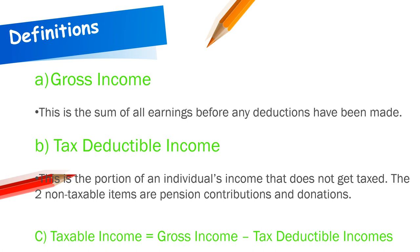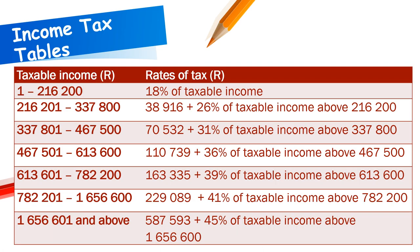The income tax table is given in annual incomes. If you are only given a monthly taxable income, multiply it by 12 to get the annual taxable income before allocating to the correct tax bracket. The tax threshold is a limit based on age: under 65 — R87,300; between 65 and 75 — R135,150; 75 and over — R151,100. If your income is below the threshold, you do not qualify to pay tax.